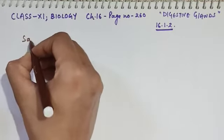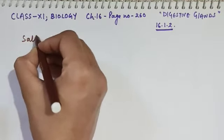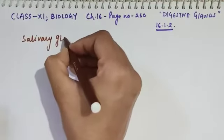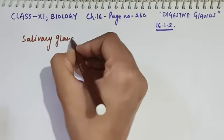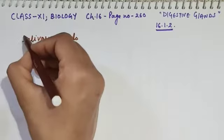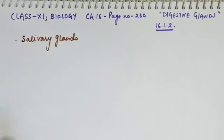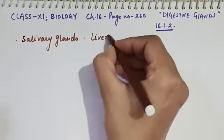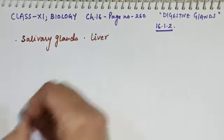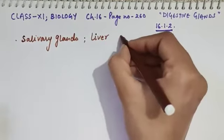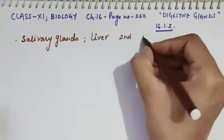The first digestive gland is the salivary glands. The next gland is the liver — the largest gland and the second largest organ of the body. And the third is the pancreas.